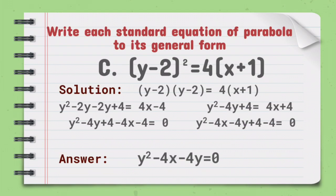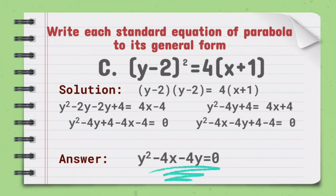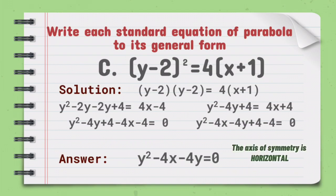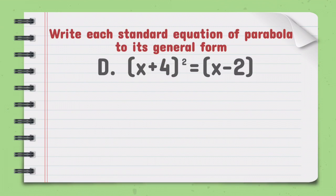Then, simplifying the similar terms, we get y squared minus 4y minus 4x equals 0. Since the equation is in the form by squared plus cx plus ey plus f equals 0, our general form of the equation of the parabola is y squared minus 4x minus 4y equals 0. The value of b equals 1 and the value of c is not equal to 0. So the axis of symmetry is horizontal.